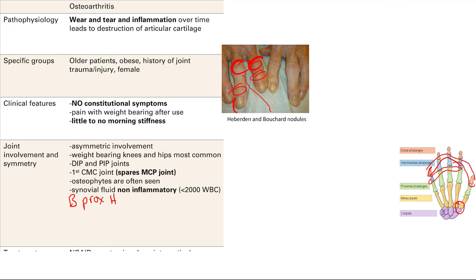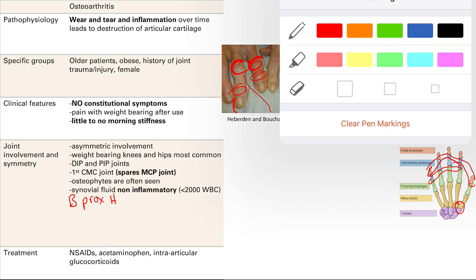Remember we're talking about synovial joints, which have synovial fluid that can be aspirated and analyzed to assess inflammatory versus non-inflammatory states. For osteoarthritis, the synovial fluid is non-inflammatory — though there is a little inflammation in the pathophysiology, it's not the main process. Treatment focuses on pain reduction and reducing inflammation: NSAIDs, acetaminophen, and intraarticular glucocorticoids, since this is a localized inflammation in that specific joint.